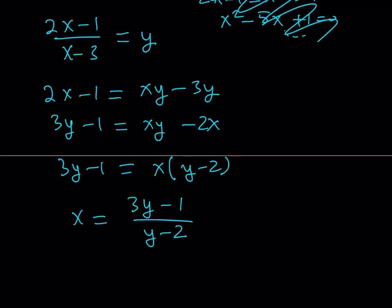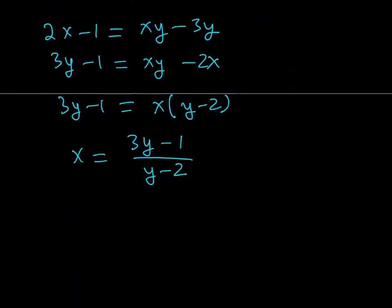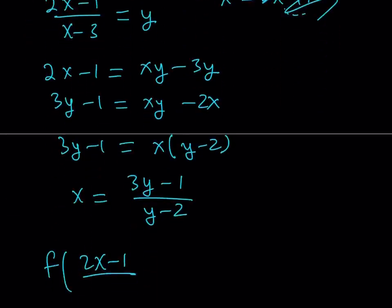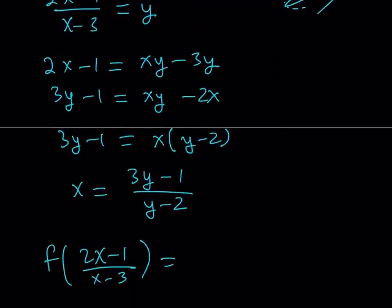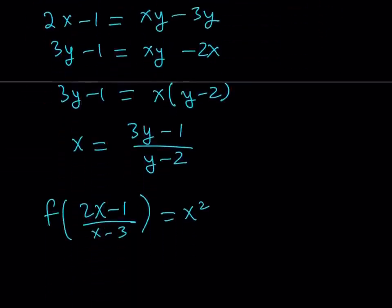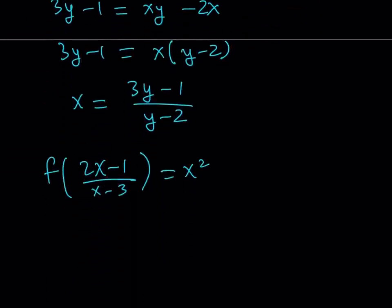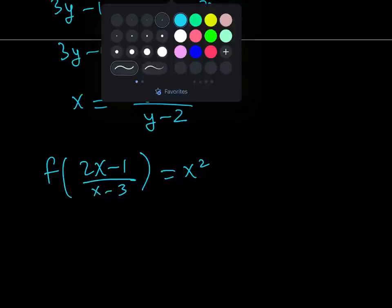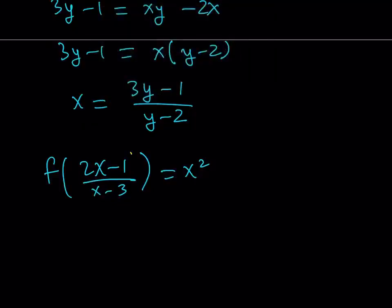So our original expression, if you remember, it was f of 2x minus 1 over x minus 3 is equal to x squared. Right? And I was trying to find f of x here. Now, I noticed that by replacing this with y, I'm basically replacing x with this. So let's go ahead and replace x with this on the right-hand side.